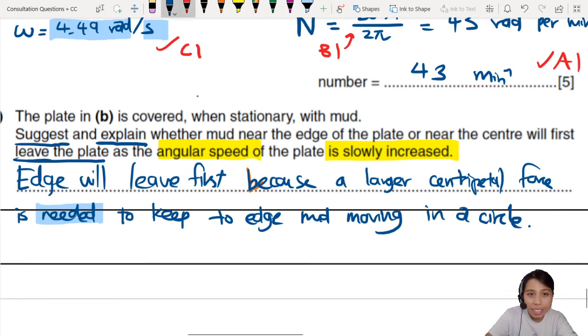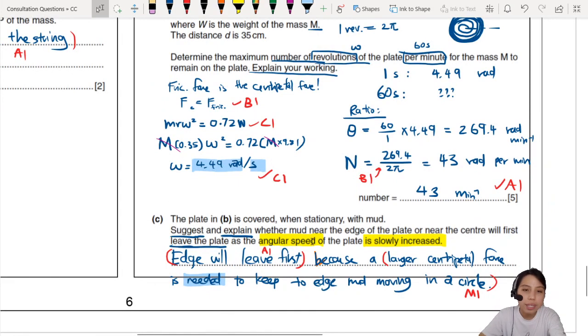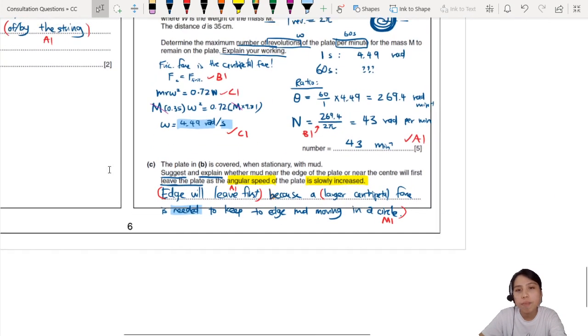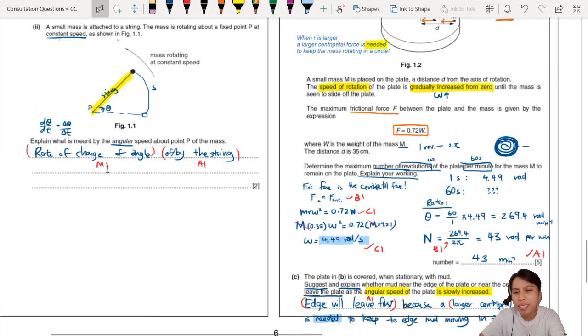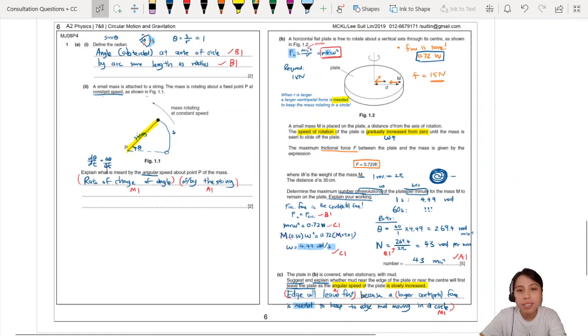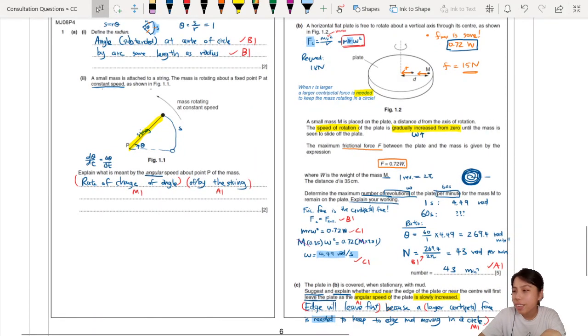This is a two marks question. The first mark is the reason. The edge will leave first is an A1 mark, but to get it you need to explain properly. A larger centripetal force is needed to keep the edge moving in a circle. That is how you get your method mark to get the A1 mark. Think about centripetal force required. This skill of explaining applies to all kinds of past year questions about things flying off circular paths, escape velocity and things like that. Hopefully that was helpful.